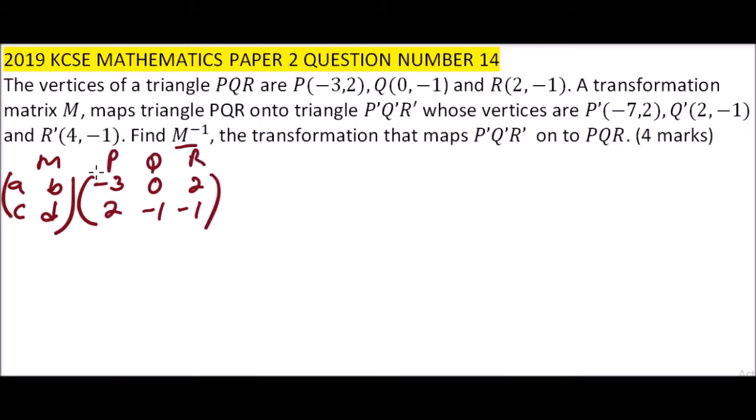We just write the vertices in column form. This should give us the matrix to be formed using P'Q'R'. So this is (-7, 2), (2, -1) and (4, -1). Actually this is P', Q' and R'. Those are the matrices that have to be formed.